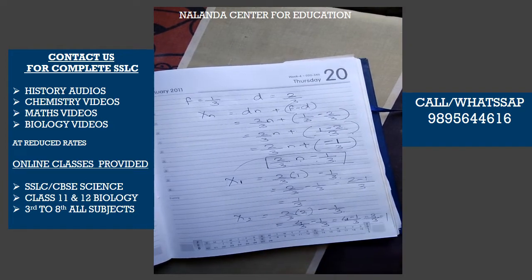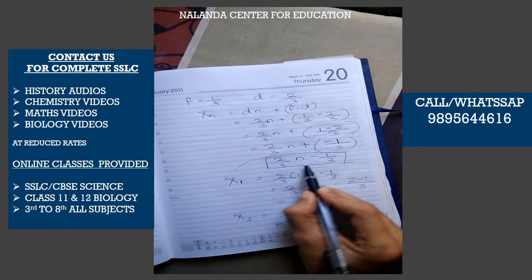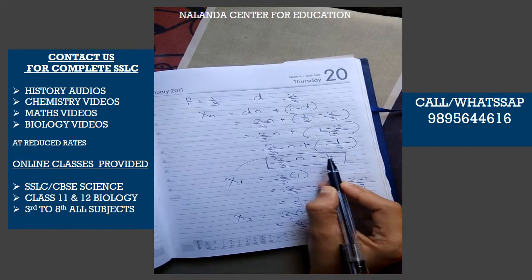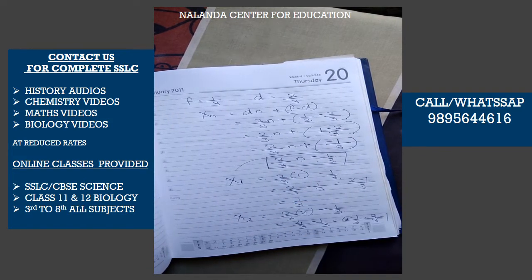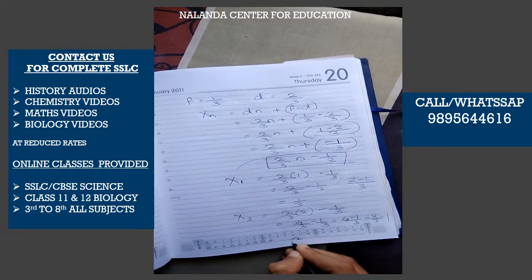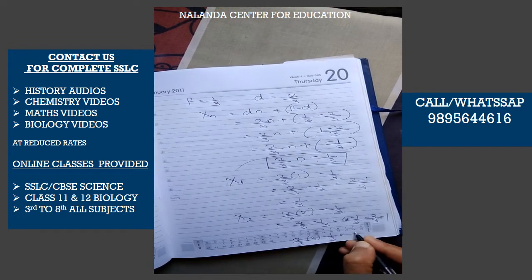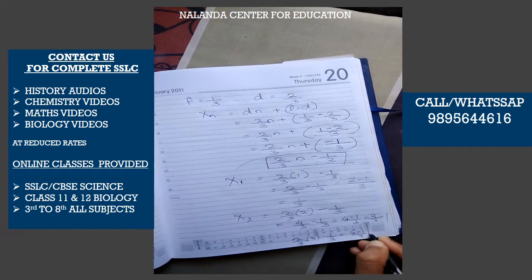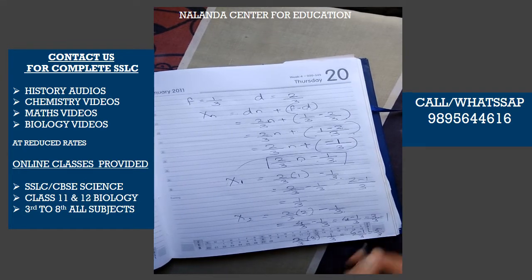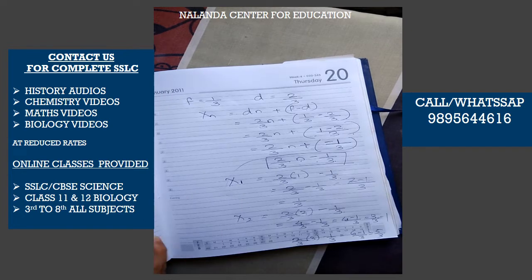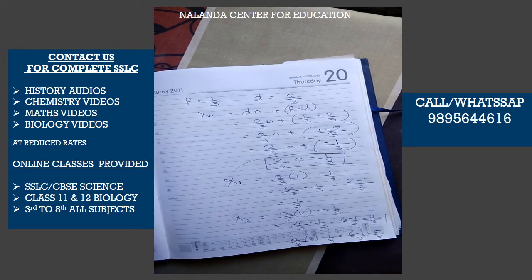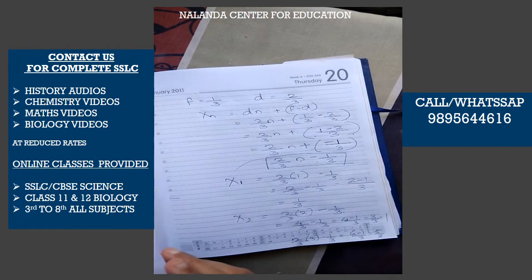x3 = 2/3 into 3 minus 1/3 = 6/3 minus 1/3 = (6-1)/3 = 5/3. The sequence 1/3, 1, 5/3... follows the algebraic expression xn = (2n-1)/3.